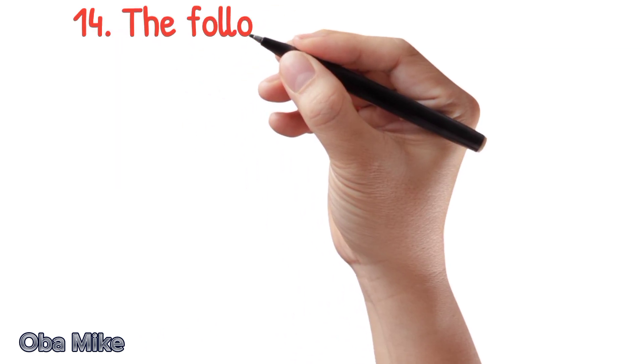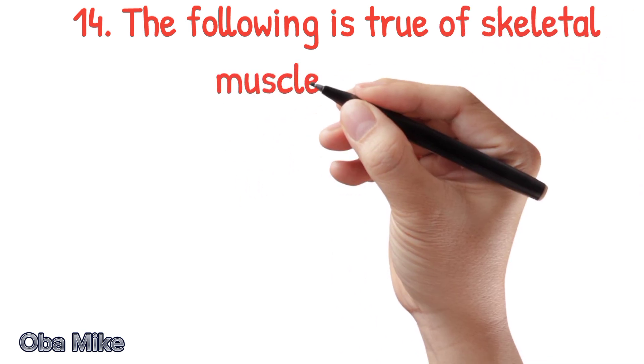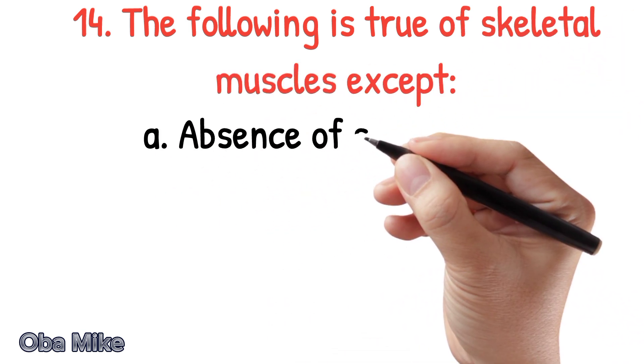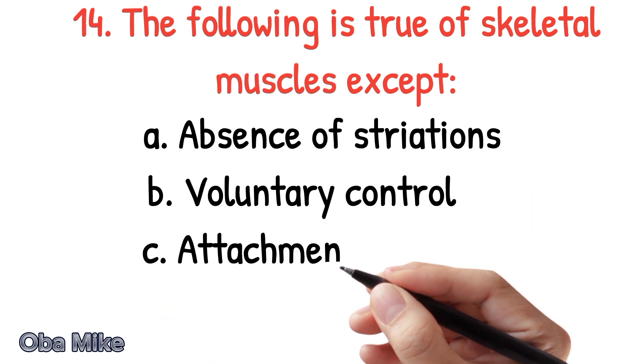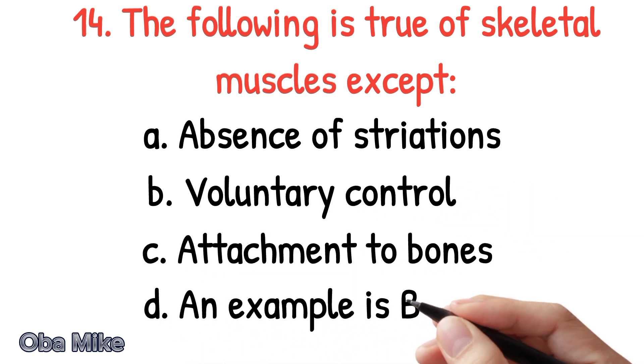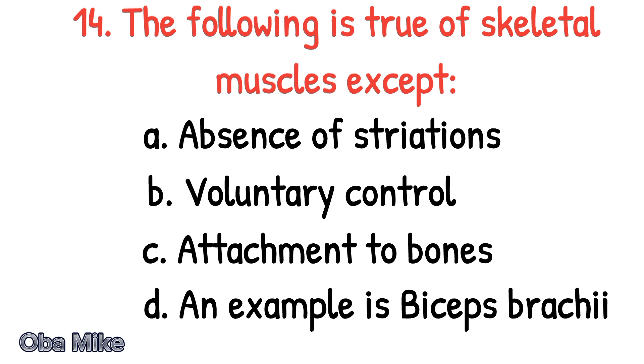Number 14. The following is true of skeletal muscles except A. Absence of striations, B. Voluntary control, C. Attachment to bones, D. An example is bicep brachii. The correct answer is A.